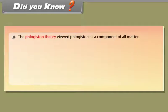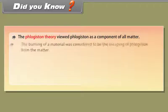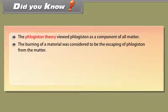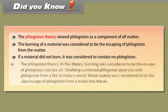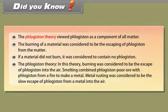Did you know, the phlogiston theory viewed phlogiston as a component of all matter. The burning of a material was considered to be the escaping of phlogiston from the matter. If a material did not burn, it was considered to contain no phlogiston. In this theory, burning was considered to be the escape of phlogiston into the air. Smelting combined phlogiston poor ore with phlogiston from a fire to make a metal. Metal rusting was considered to be the slow escape of phlogiston from a metal into the air.